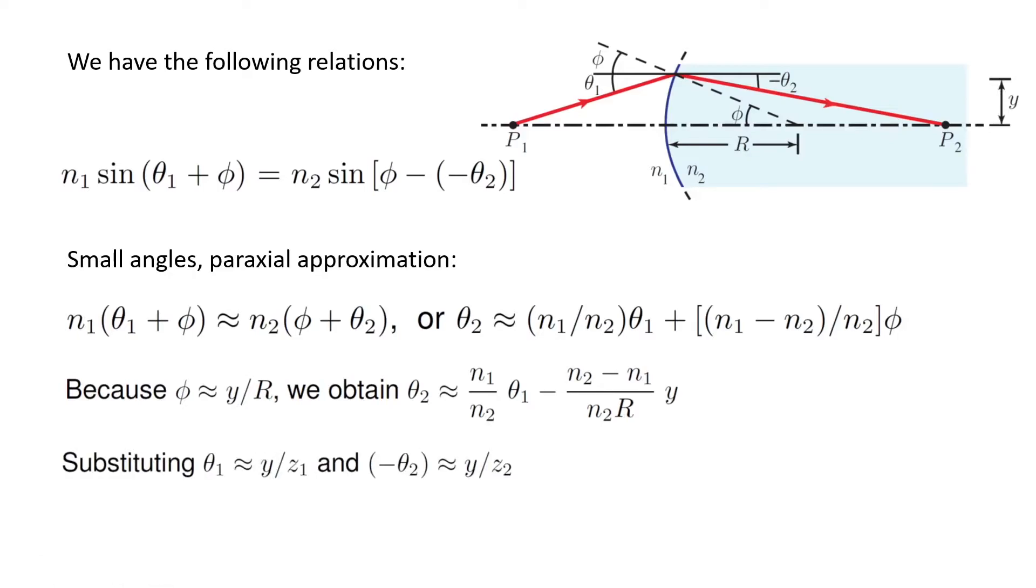Also, I can express theta 1 and theta 2 versus the height and the horizontal distances. For example, here, theta 1 is y over z1. This is theta 1. The distance between point P1 and the boundary is z1, and the height is y.